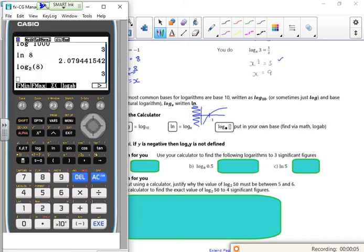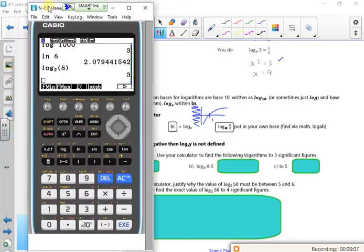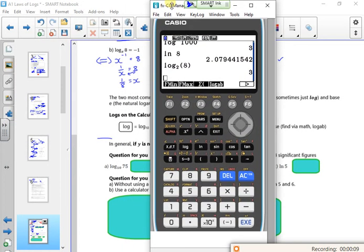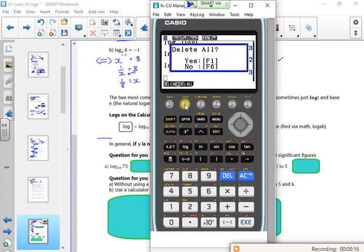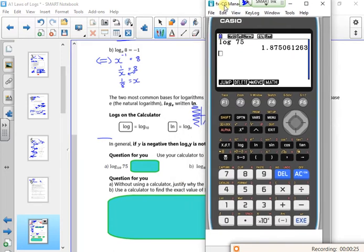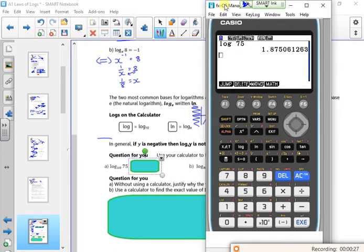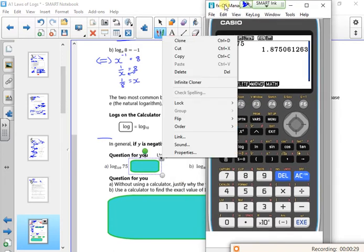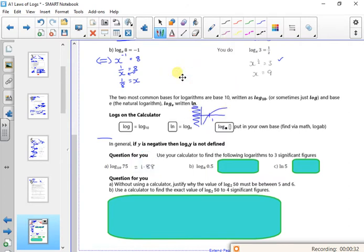So the first one is just doing log of 75. Log 75, so log and then 75 in the calculator, 1.875, 1.88, 1.875.